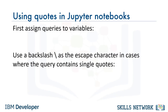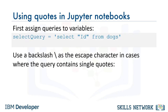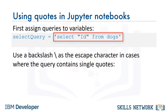When using quotes in Jupyter notebooks, you may be issuing queries by first assigning them to Python variables. In such cases, if your query contains double quotes — for example, to specify a mixed case column name — you could differentiate the quotes by using single quotes for the Python variable to enclose the SQL query and double quotes for the column names. For example: select_query = 'SELECT "Id" FROM dogs'.